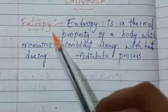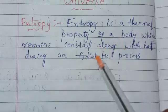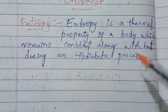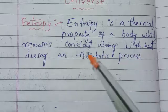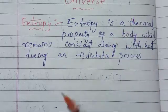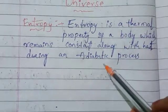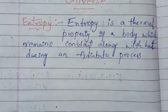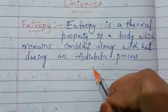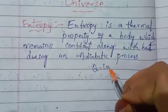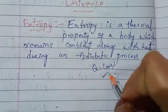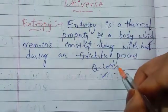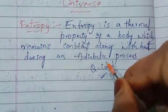So first, entropy. Entropy is a thermal property of a body which remains constant along with heat during an adiabatic process. That is the adiabatic process consideration. The adiabatic process is the process where the amount of heat supplied to the system is constant.